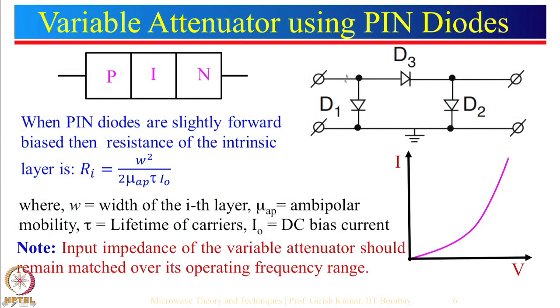The concept of the variable attenuator and the problems associated with it: the three positive resistance values of the PIN diodes must vary according to the formulas given for the pi network, where R1 and R2 must vary in a coordinated way. This becomes difficult sometimes. So there is an alternate solution to this problem.